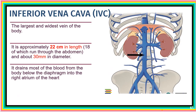The inferior vena cava is actually the largest and widest vein in the body, about 20 cm in length. Of this total length, 18 cm is seen in the abdomen and the rest within the thorax, where it runs in to join the right atrium of the heart. This vein drains most of the blood from below the diaphragm into the right atrium.